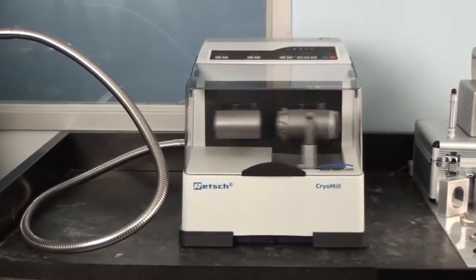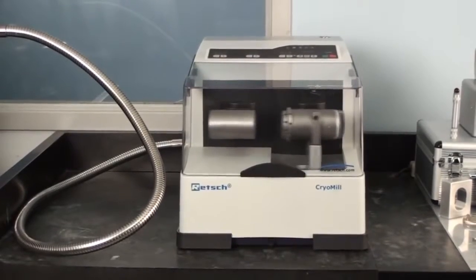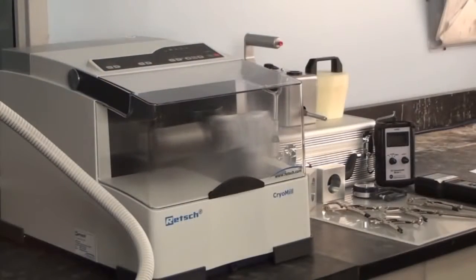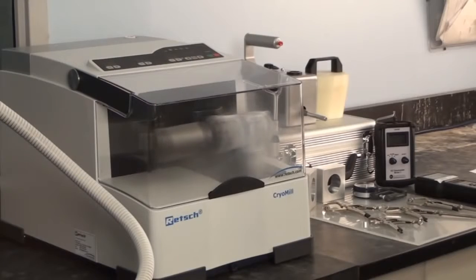He will then lock this vessel into the cryogenic mill which will have a five minute cool down period to bring your sample down to negative 196 degrees Celsius.